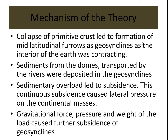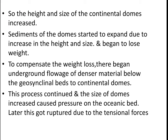The collapse of the primitive crust led to the formation of geosynclines in the middle latitudes. As the interior of the earth was contracting, sediments from the domes were transported by rivers and deposited in the geosynclines. The sedimentary overload led to subsidence. This continuous subsidence caused lateral pressure on the continental masses. The gravitational force, pressure, and weight of the load caused further subsidence of the geosynclines, increasing the height and size of the continental domes. To compensate for this weight loss, underground flows of denser material moved from below the geosyncline beds to the continental areas.